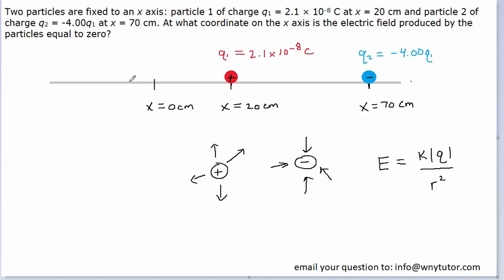So the only other possible region at which the electric field could equal zero would be somewhere to the left of the positive charge. There we would have an electric field pointing away from the positive charge — to the left — and an electric field pointing towards the negative charge — to the right. In this case, we can have these two electric fields equal zero if we choose the correct spot.